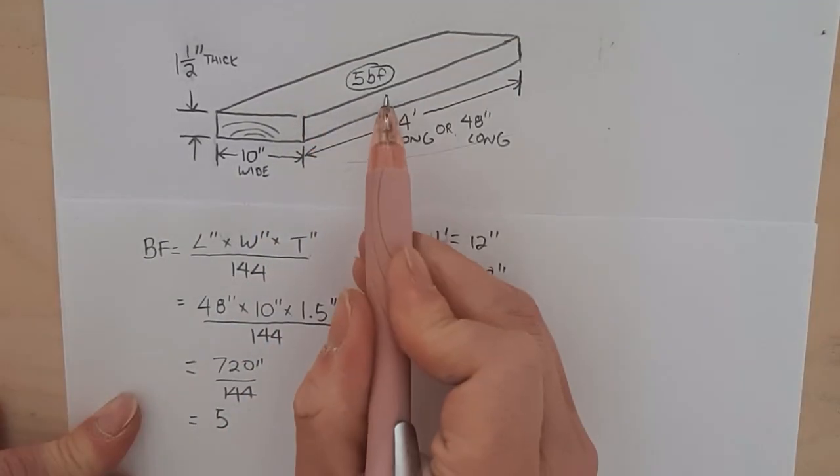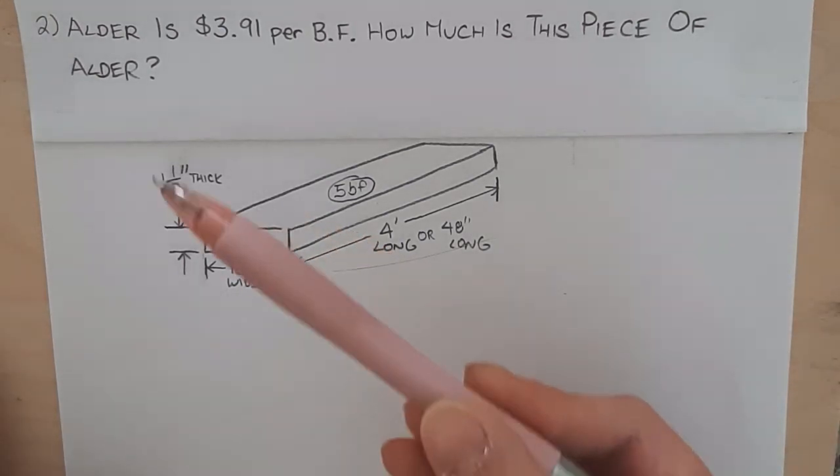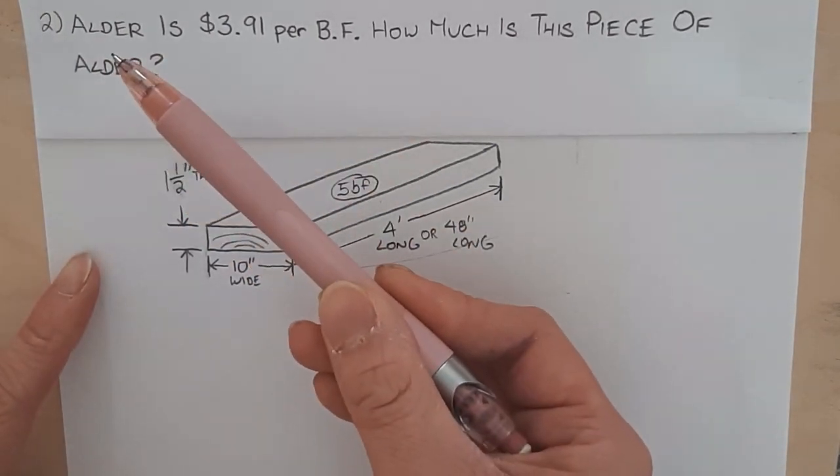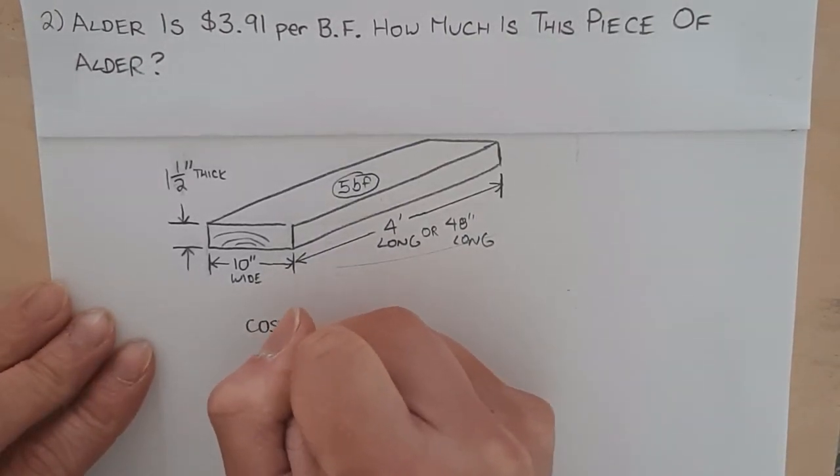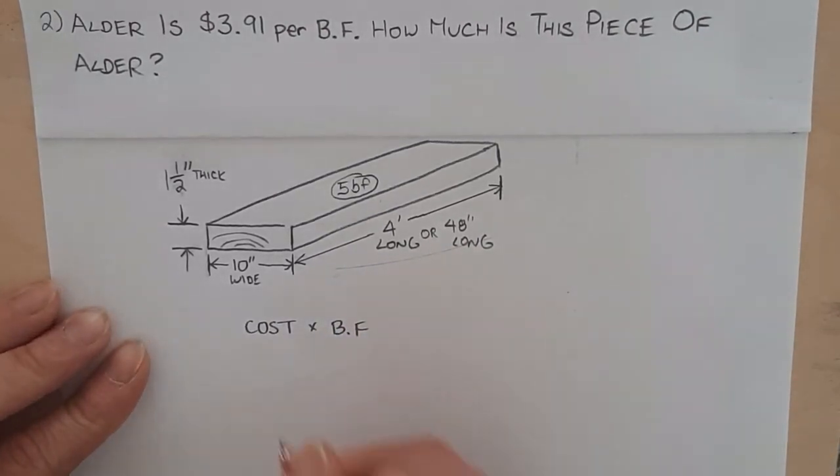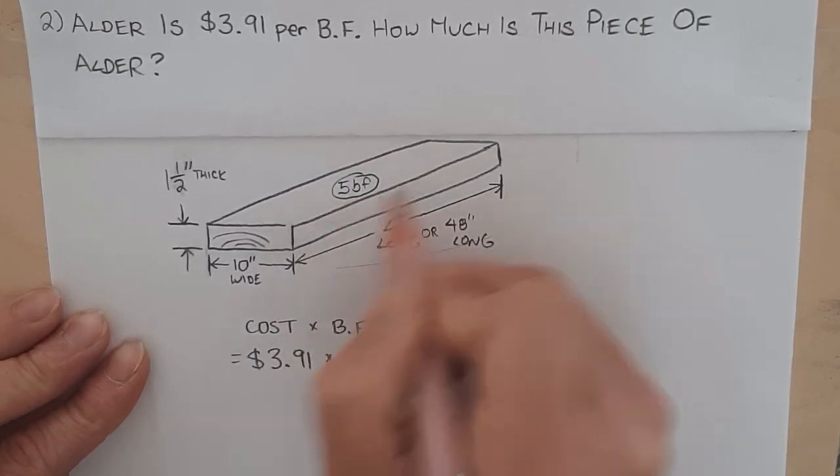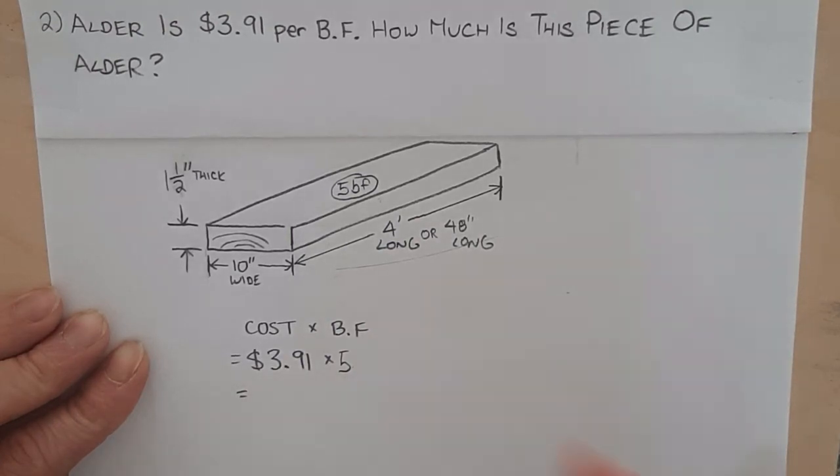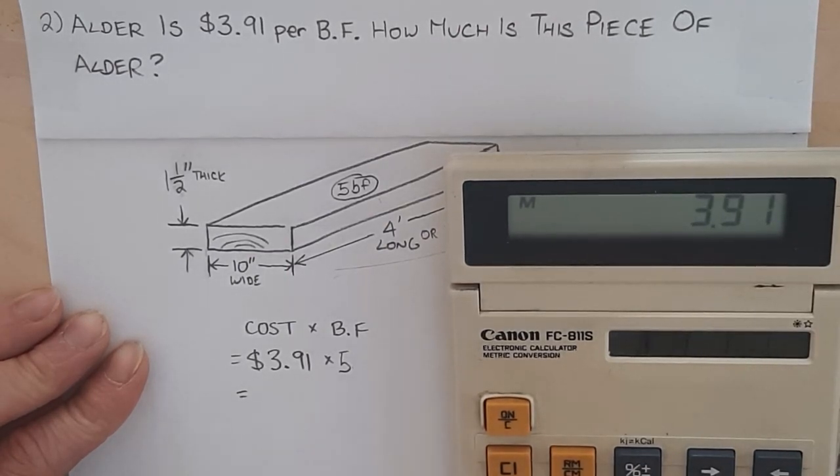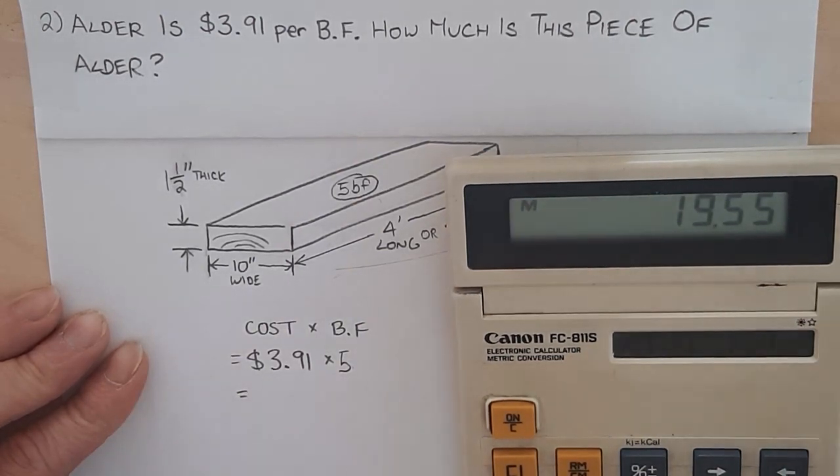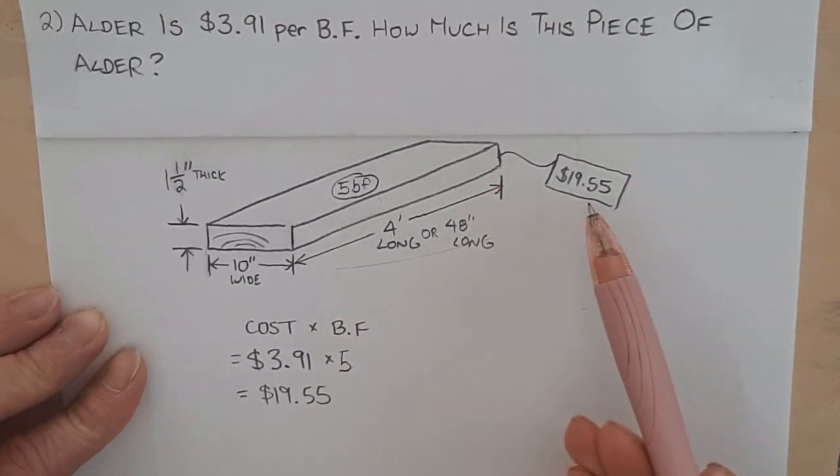So this piece here is five board feet. So now that we know how many board feet this piece of alder is, let's figure out how much it costs. Now lumber sometimes is sold in board feet. And so in this case, the alder is $3.91 per board feet. And so I need to figure out how much this costs. So what I would do is I would just simply take the cost and multiply it by the board feet. So in this case, the cost is $3.91. And the board feet of the alder is, there's five board feet in this piece here. So that's five. And we just simply multiply these two numbers together. So $3.91 times five is $19.55. This piece of alder is $19.55.